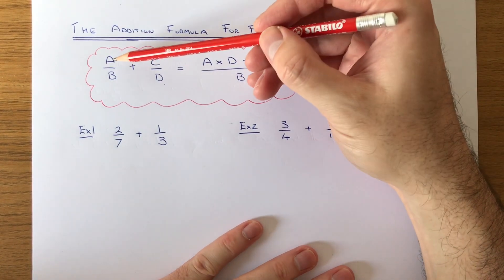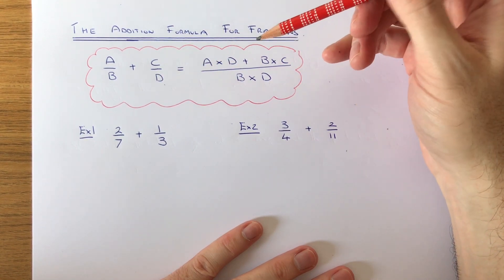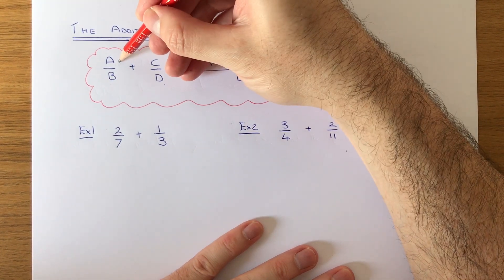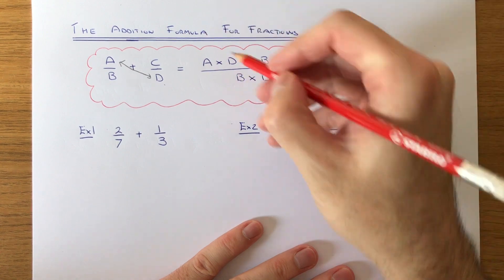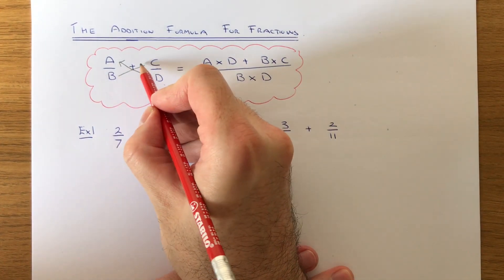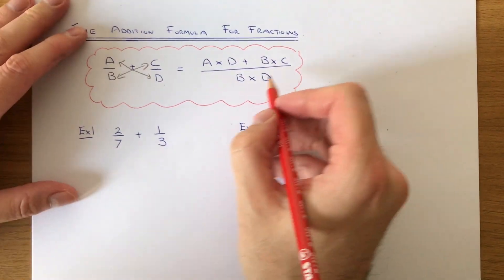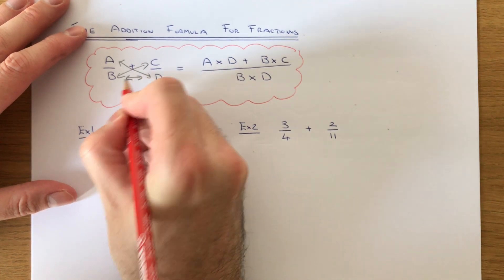If you have two fractions, A over B and C over D, we can add these two fractions together by first multiplying A by D and then adding on B times C. This goes on the top of the fraction, and on the bottom of the fraction we're going to multiply B by D.